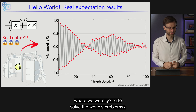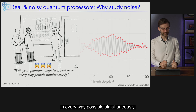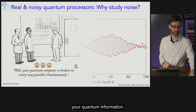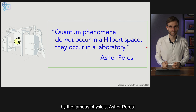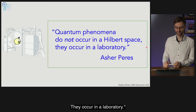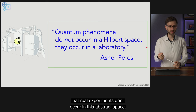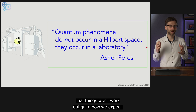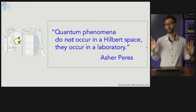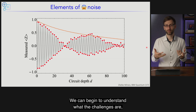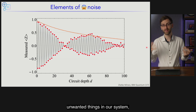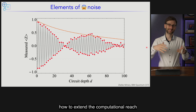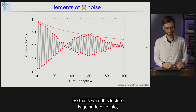So what happened to our beautiful quantum algorithm? This situation may remind you of a joke: your quantum computer is broken in every way possible simultaneously, instead of simultaneously processing your quantum information. I'm reminded of a quote by physicist Asher Peres: 'Quantum phenomena do not occur in a Hilbert space. They occur in a laboratory.' Real experiments don't occur in abstract space — they occur in the real world with real imperfections. But that doesn't mean we should abandon hope. We can understand what the challenges are, what the issues are due to what we call noise, and how to overcome them to get better results and extend the computational reach of the quantum computer.